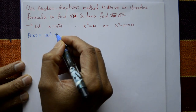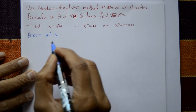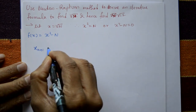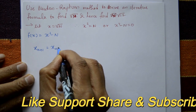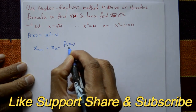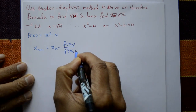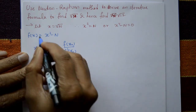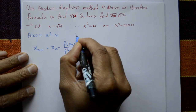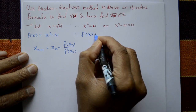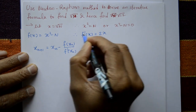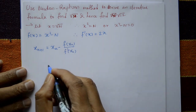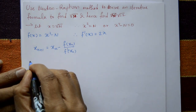The Newton-Raphson formula is x_{n+1} = x_n - f(x_n) / f'(x_n). Now f'(x) is required. Differentiating f(x) = x² - n, we get f'(x) = 2x, since n is a constant.